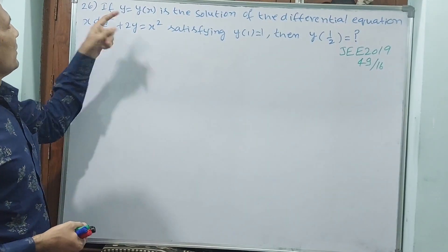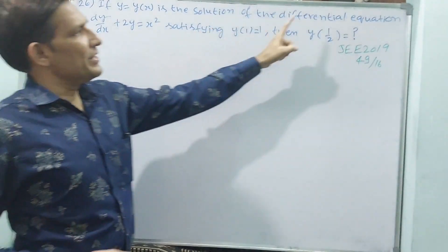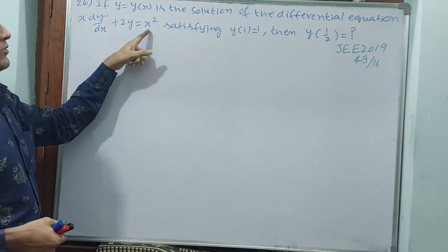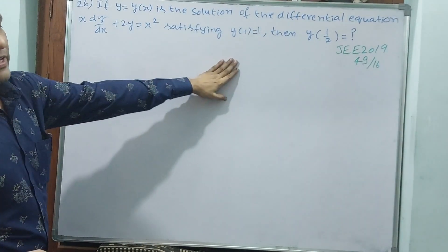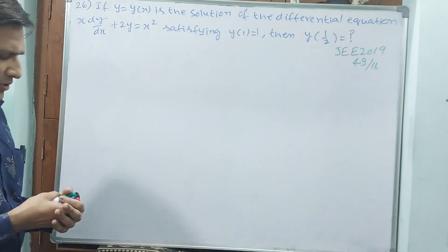See question number 26. If y equals y of x is the solution of the differential equation x dy by dx plus 2y equals x square, satisfying y of 1 equals 1, then y of 1 by 2 equals how much? This is another 2019 question already.